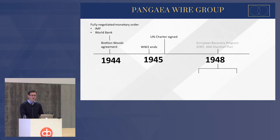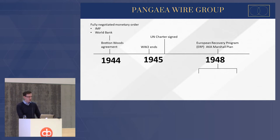Then we have the Marshall Plan, which really helped to rebuild Europe. Europe and Britain arguably were the most powerful regions in the world, which really led the world in many aspects. But as World War II ended, Europe became sort of a secondary power, with the United States taking advantage of this — not in any malicious way, but in a way to rebuild and lead on that front.